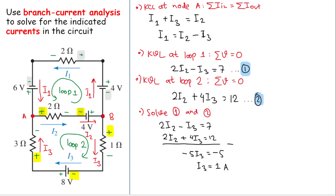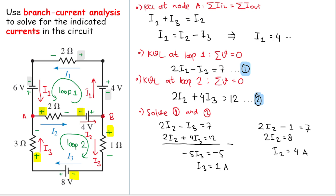With i3 equal to 1 ampere, we calculate i2: 2i2 minus 1 equals 7, so 2i2 equals 8 and i2 equals 4 amperes. Then using i1 equals i2 minus i3, we get i1 equals 4 minus 1, so i1 equals 3 amperes.